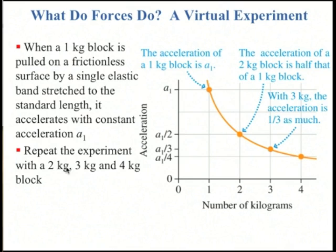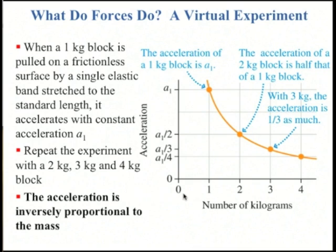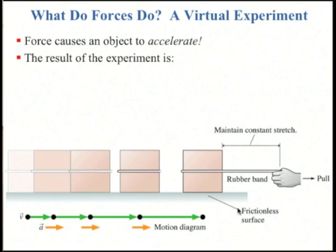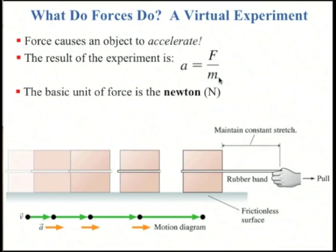Doing the same experiment with different blocks: the one kilogram block accelerates at A1, but attaching one rubber band to a two kilogram block gives half the acceleration, A1/2. A three kilogram block accelerates a third as much, and a four kilogram block a quarter as much — this is an inverse proportionality of acceleration to mass. So the acceleration of an object is proportional to the force and inversely proportional to the mass. We introduce a unit for force called the newton, which is one kilogram·meter per second squared. If force is in newtons and mass in kilograms, this equation gives acceleration in meters per second squared.